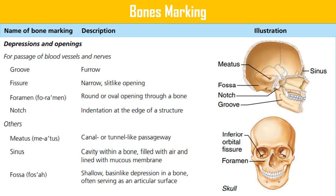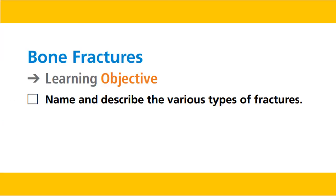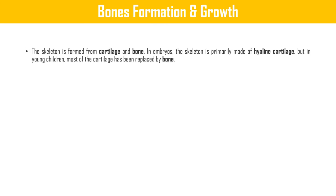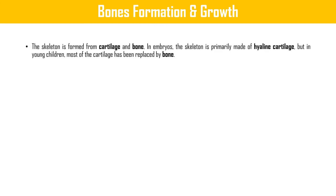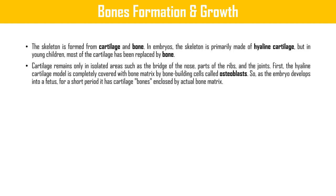Now we're going to discuss bone fractures and bone formation and growth. In the embryo, the skeleton is primarily made of hyaline cartilage, but in young children most of the cartilage has been replaced by bone. Cartilage remains only in isolated areas such as the bridge of the nose, parts of the ribs, and joints. The hyaline cartilage model is covered with bone matrix by bone-building cells called osteoblasts.